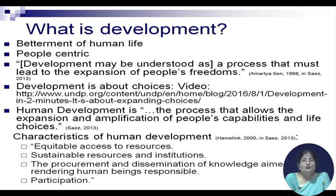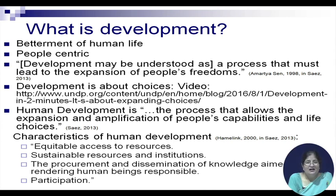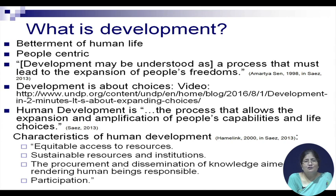Development may be understood — and this is by Professor Amartya Sen, Nobel Prize winner in economics — as a process that must lead to the expansion of people's freedoms. How we do things is limited by the resources we have and by the knowledge we have regarding how to use those resources. Professor Sen says we need to increase our knowledge so that we are able to use our resources in such a way that our lives become more comfortable — meaning we need to have more choices than we currently have in order to be more developed.